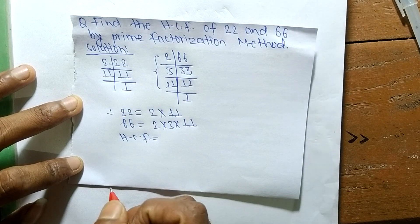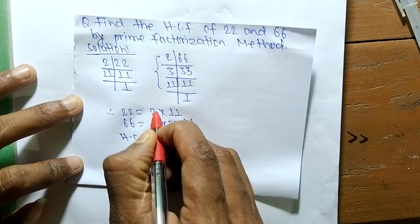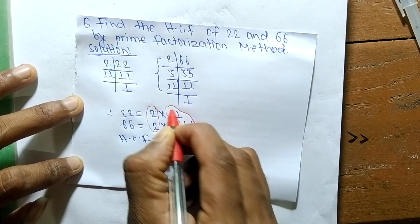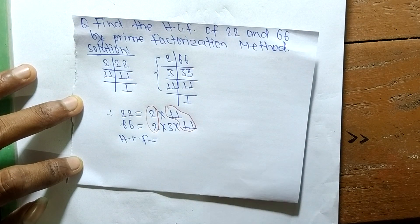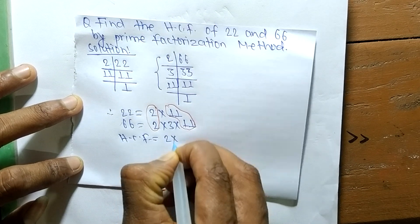The first common factor here is 2, and the second one is 11. So HCF is the product of all the common factors, so it is 2 times 11.